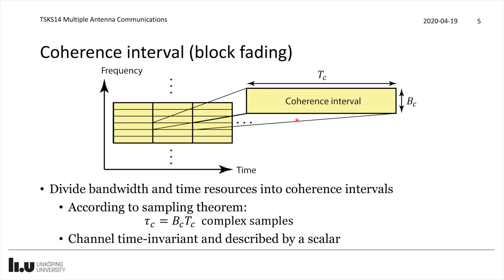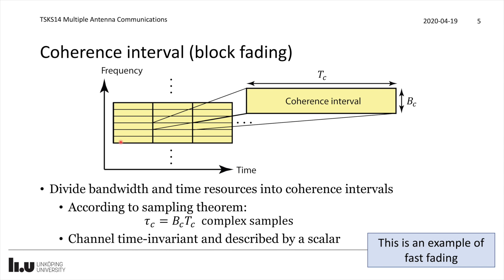This defines the block fading model: the channel changes over time and frequency, but we divide time-frequency resources into coherence intervals where the channel is time invariant and described by a scalar. Within each coherence interval we learn how the channel behaves, send data, and repeat over different coherence intervals in time and frequency. This is like a multi-carrier system where each coherence interval represents one subcarrier. Each coherence interval provides one channel realization, and ergodic capacity is achieved by coding over many such intervals.